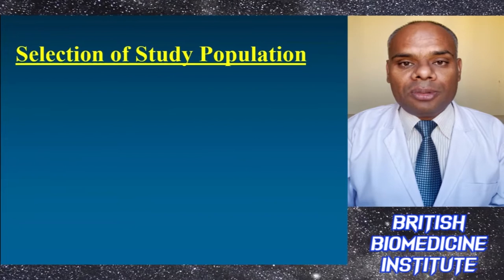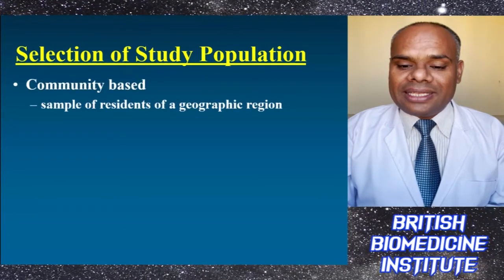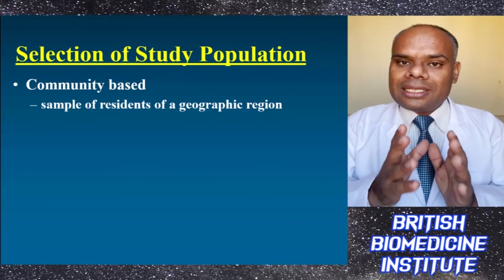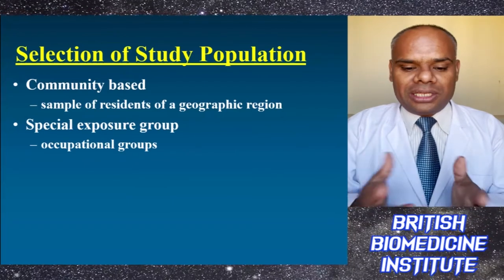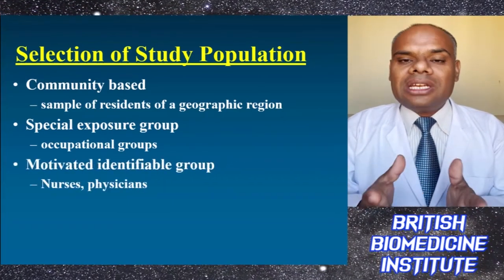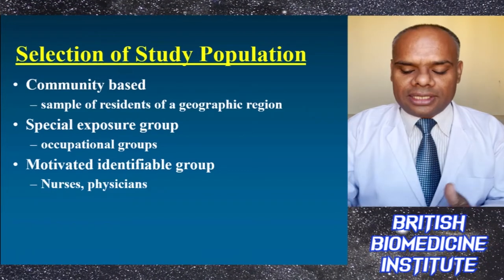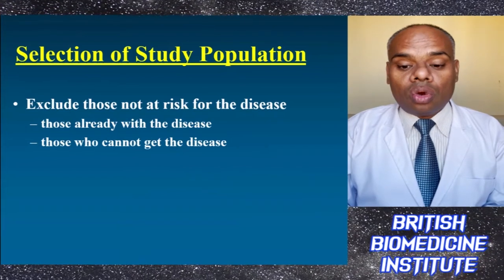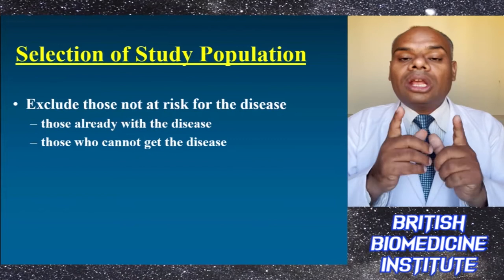Selection of the study population will be based upon the community, such as a sample of residents of a geographic region, or a special exposure group like an occupational group population, or motivated identifiable groups like doctors, physicians, or nurses. We have to exclude those not at risk of the disease — those who already have the disease or those who cannot get the disease.